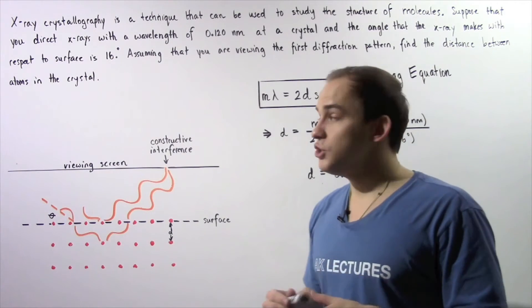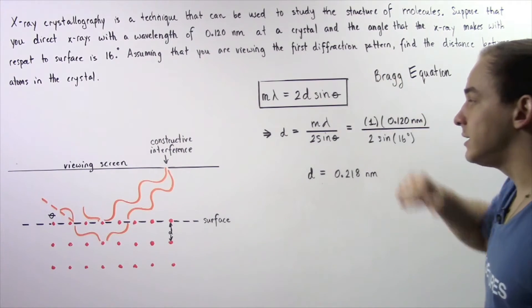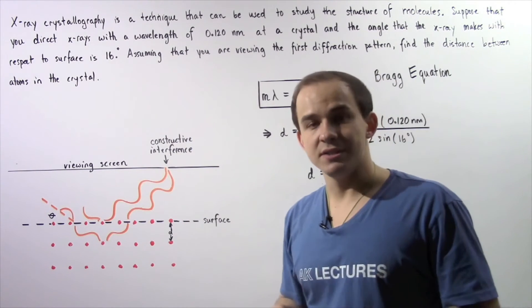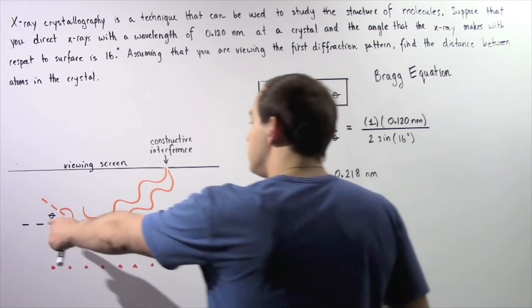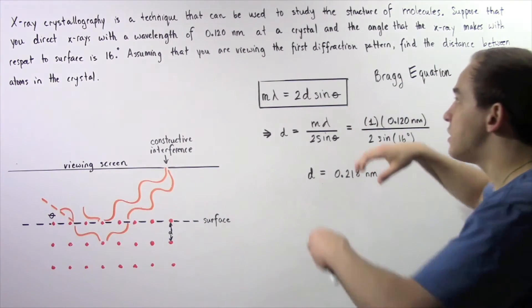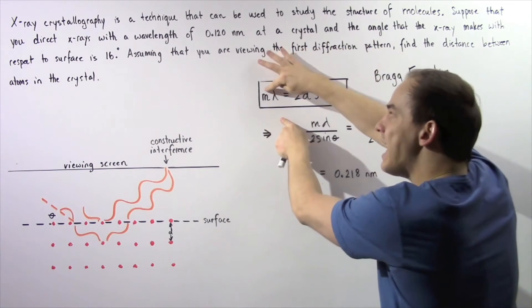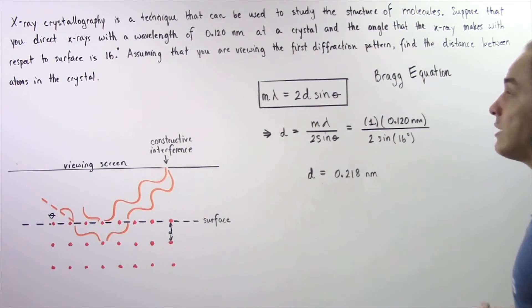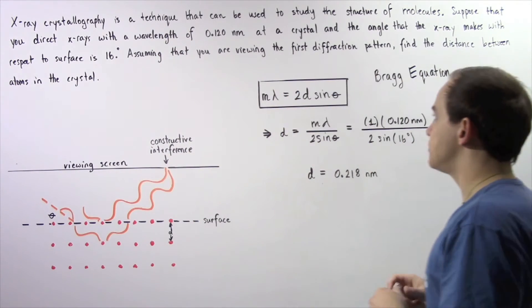We want to use the Bragg equation to calculate the separation distance. We're assuming that we know the angle. We're examining the first diffraction pattern, which means m equals 1. We also know the wavelength of our X-rays.